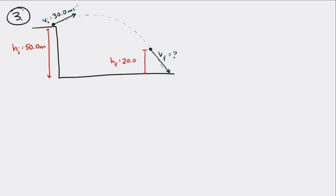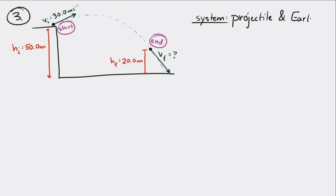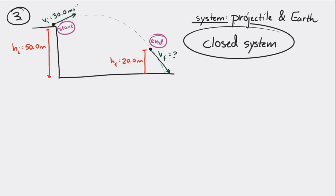Draw a little diagram here. We want to know what speed it's moving at 20 meters above the ground. In this situation, nothing is adding or removing energy from the system. The only things involved are the projectile and the Earth. So if our system is the projectile and the Earth, it's closed — nothing is adding or removing energy. So EI equals EF when it's closed.